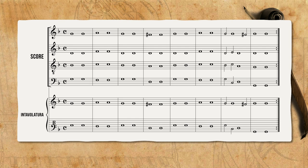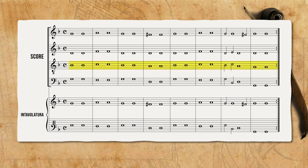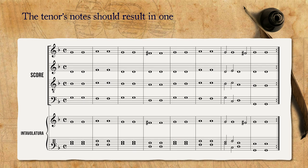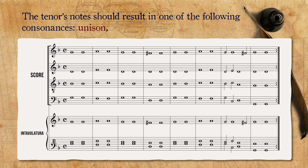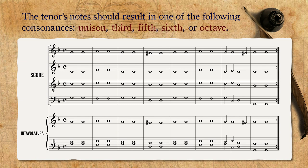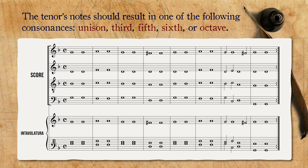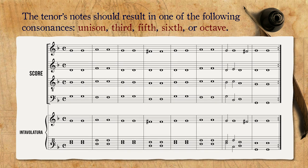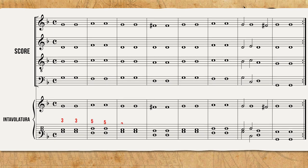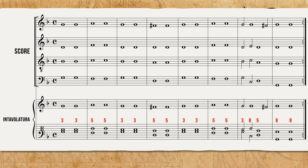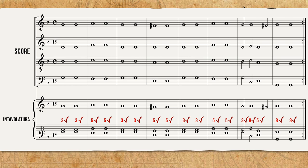Once the outer voices have been intabulated, Di Ruta goes on to add the tenor above the bass, noting that its notes should result in one of the following consonances: unison, third, fifth, sixth, or octave. By adding this comment, Di Ruta gives the intabulator — who still doesn't know counterpoint — an important tip for how to check whether the intabulation process is going well. By inspecting this during the process, the intabulator slowly becomes better at counterpoint, even if the only thing they know at this point are the consonances.